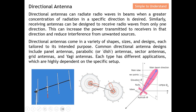A receiving antenna can also choose to receive radio waves from only one direction. This increases the power transmitted to the receiver in that direction and also reduces interference from unwanted sources, because the wanted signal is much larger compared to unwanted signals — a win-win situation. You pinpoint where to send or where to receive your signal, minimizing interference.